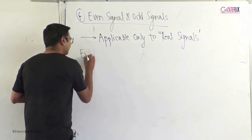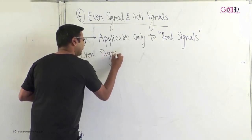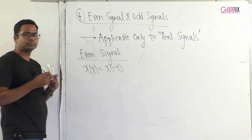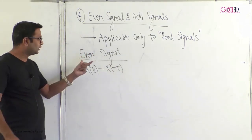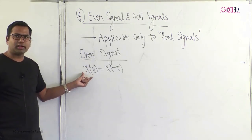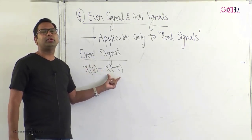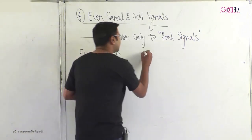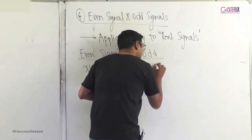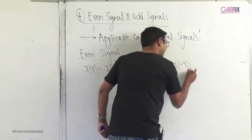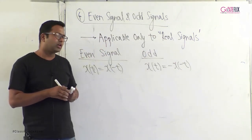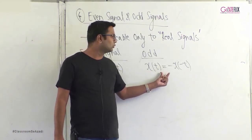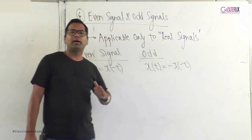A signal is said to be even if x(t) = x(−t), that is, if the original signal equals its time-reversed version. A signal is said to be odd if x(t) = −x(−t), that is, if the original signal equals its time-reversed version multiplied by −1.